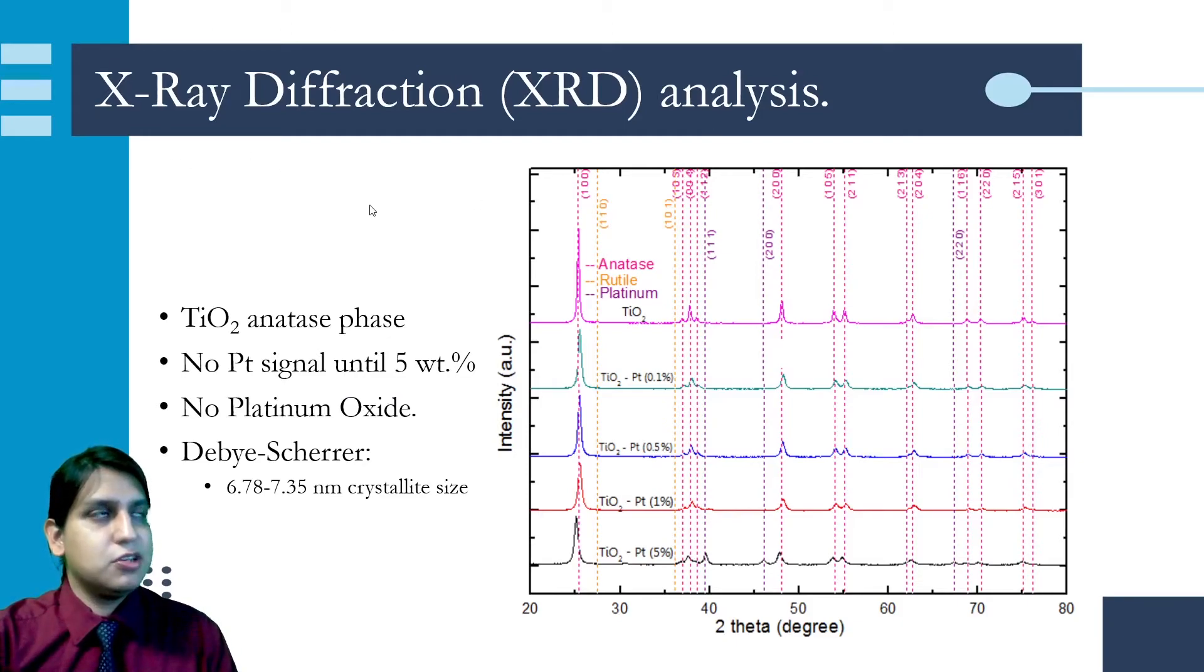From the X-ray diffraction patterns, we can infer that we obtained titanium dioxide in the anatase phase. We also didn't get any platinum signals until the highest load of platinum in the material, which suggests we obtained a homogeneous deposit of platinum on the surface.